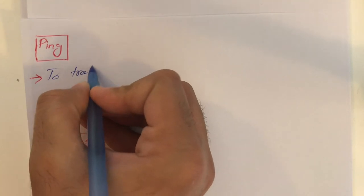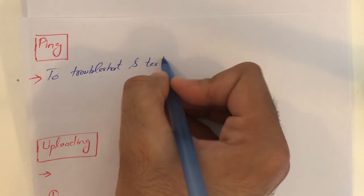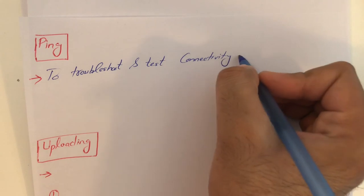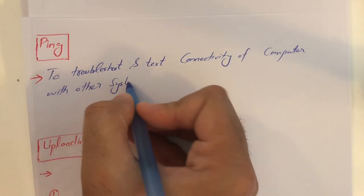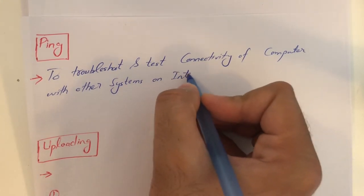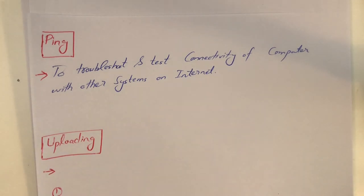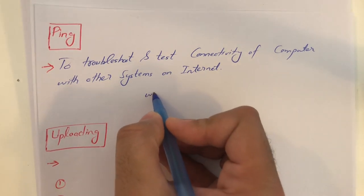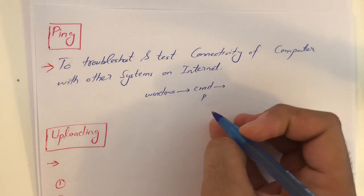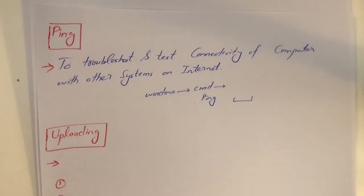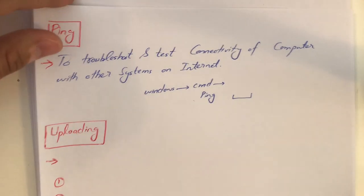A few technical terms to finish. Ping is basically a command that network administrators use to test and troubleshoot the connectivity of a computer with other systems on the internet. To try the ping command, open your command prompt by pressing the Windows button, type 'cmd', then type 'ping' followed by any website like www.google.com or ggc.edu. You can send a ping packet and see whether the website is up or not.